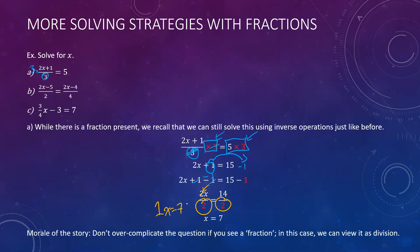The moral of the story: a lot of times when we see a fraction — because technically it's just division — we tend to overcomplicate things and think we need to find a common denominator. Sometimes it's just normal solving methods. We actually did no special technique — we just solved it using inverse operations. The hard thing with solving equations is there's not necessarily one method that fits all the time, but you want to find the most efficient way. Here, multiplying by 3 at the beginning essentially eliminated the fraction.